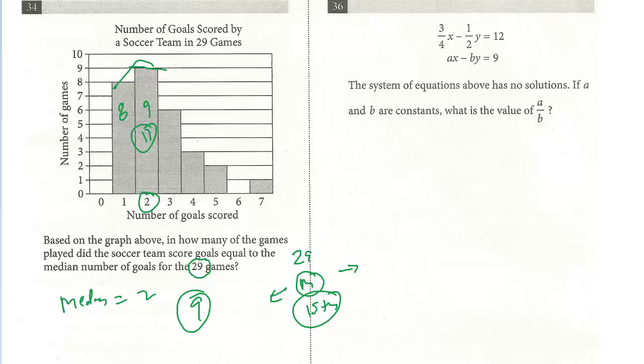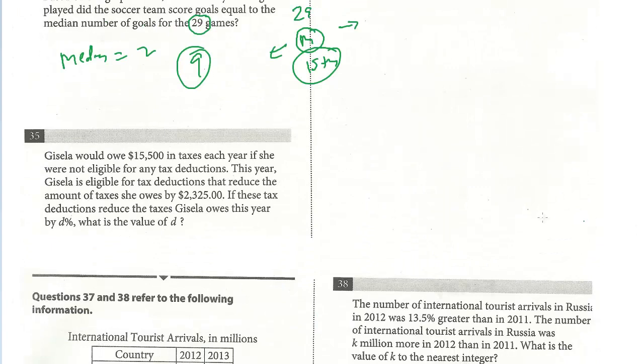Let's take a look at 35. Gisela would owe $15,500 in taxes each year if she were not eligible for any tax deductions. This year, Gisela is eligible for tax deductions that reduce the amount of the taxes she owed by $2,325. If the tax deductions reduce the taxes Gisela owed this year by D%, what's D?